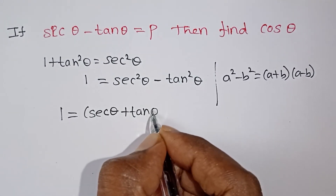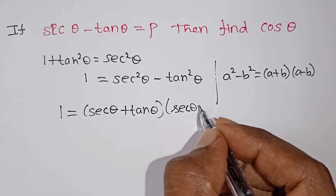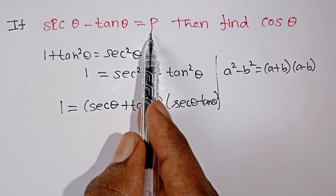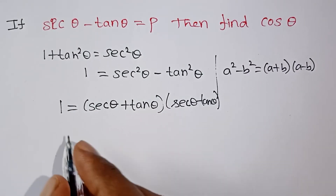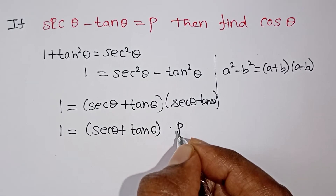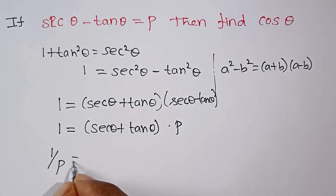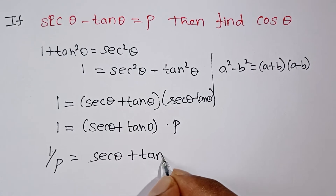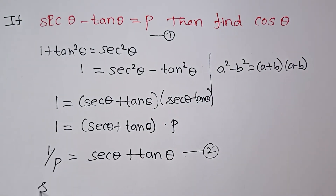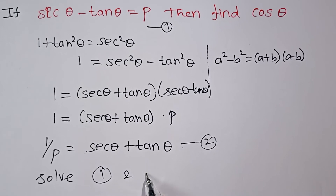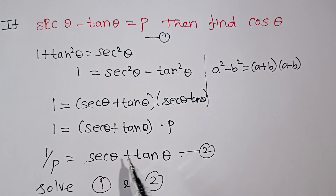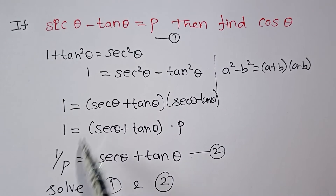Since sec θ minus tan θ equals p, substituting gives: sec θ plus tan θ multiplied by p equals 1. Therefore sec θ plus tan θ equals 1 by p. So we now have two equations: equation 1: sec θ minus tan θ equals p, and equation 2: sec θ plus tan θ equals 1 by p.